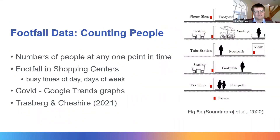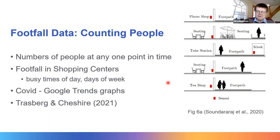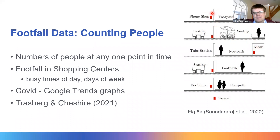Football data — meaning footfall data — is another great example, focused on how many people are at a specific point in time, typically in shopping centres. It captures busy times by hour of day, day of week, and time of year, and it's all collected by sensors. There are a few ways sensors might be arranged: a sensor inside a shop, a sensor in a kiosk on the street, or a sensor where you have to interpret data carefully because there's outside seating or a bus stop, meaning you'll have people passing as well as people in a static position near the sensor.